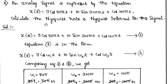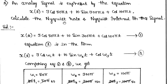Let's see numerical number 1. It is given that an analog signal is expressed by the equation x(t) = 3cos(50πt) + 10sin(300πt) + cos(100πt). We are asked to find the Nyquist rate and Nyquist interval. We know the Nyquist rate is Fs = 2·Fm, and the Nyquist interval is Ts = 1/Fs.